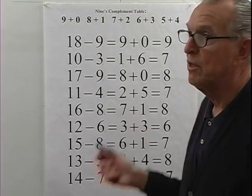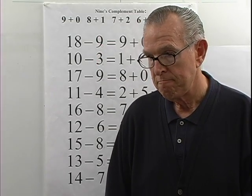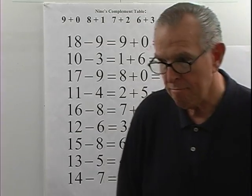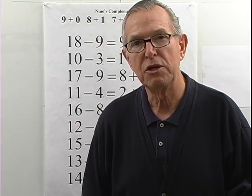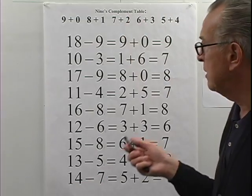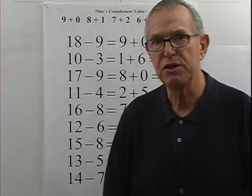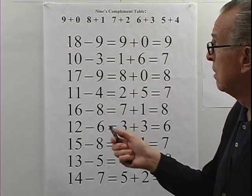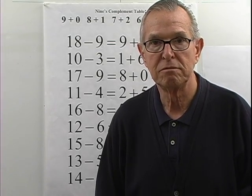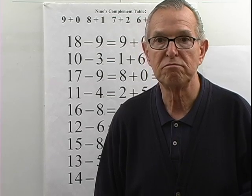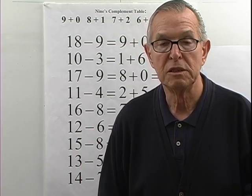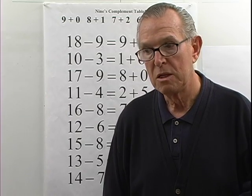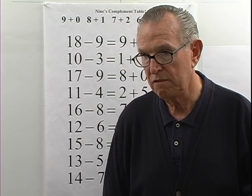We found the nine's complement of the subtrahend, and for the minuend all we do is add one to a number. Is this algorithm valid for all numbers? No. The subtrahend digit must be between zero and nine — one of the basic numbers — and the minuend must be between 10 and 19. If either is out of range, the nine's complement procedure will fail. So this is a special case, valid for a certain range of numbers.